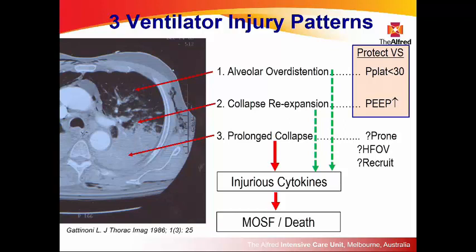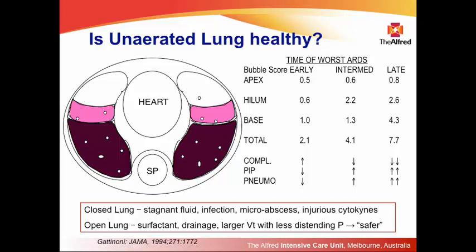Reducing injury from zones one or two reduces mortality, but there is still mortality coming from the chronically collapsed zone. This work goes back a long time — first recognised by Gattinoni, who looked at where lung cysts occurred in supine patients. They occurred most in people who had ARDS longer, and not in the least dependent over-distended zones but in the chronically collapsed zones, due to stagnation of fluid, infection, and micro-abscess formation — the zone producing injurious cytokines. When you open this lung, as when turning someone prone, that zone clears completely, surfactant is reproduced, the lung drains, and you get a larger tidal volume distributed over more lung with less distending pressure.